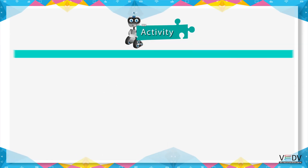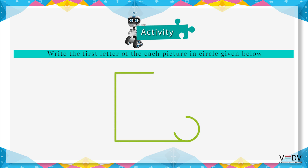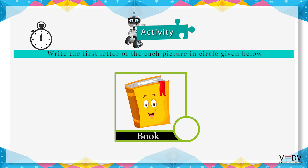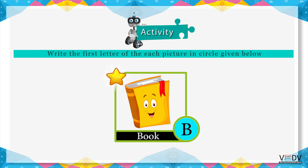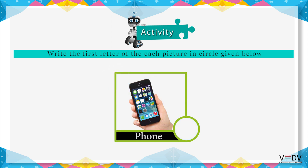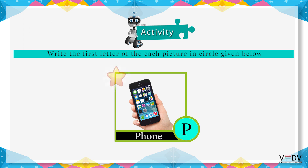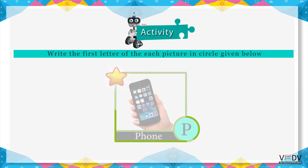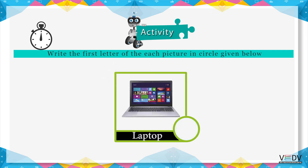Activity: Write the first letter of the name of each picture in the circle given below. B — you earn a star. S — you earn two stars. L — you earn two stars.